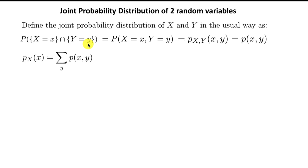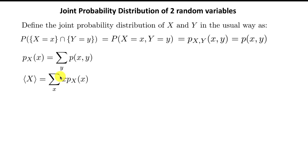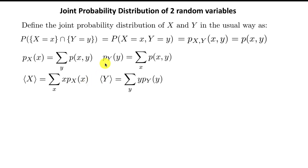If one is only concerned with events X, then you sum over all events Y to get the probability distribution for only the random variable X. The expectation value of X, expectation value of X squared, or any function of X is weighted by that probability. Exactly the same can be done for the random variable Y — in that case, we sum over all events X, thereby getting the probability distribution of Y alone, and expectation values are calculated in exactly the same way.